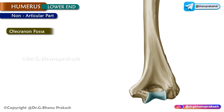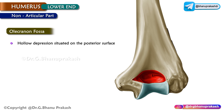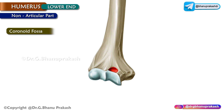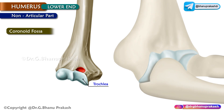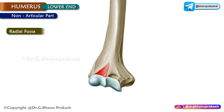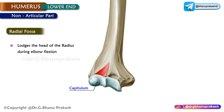The olecranon fossa is a hollow depression on the posterior surface of the lower end. Its floor is very thin and hence may get perforated. It lodges the olecranon process of the ulna during extension of the elbow. The coronoid fossa is a small depression just above the trochlea; it lodges the anterior margin of the coronoid process of the ulna during elbow flexion. The radial fossa is a very small depression lying lateral to the coronoid fossa and above the capitulum; it lodges the head of the radius during elbow flexion.